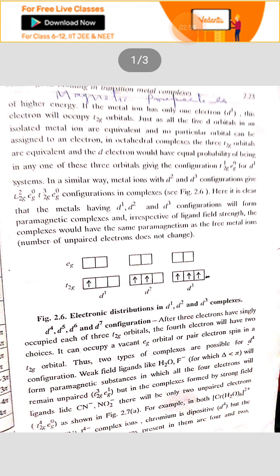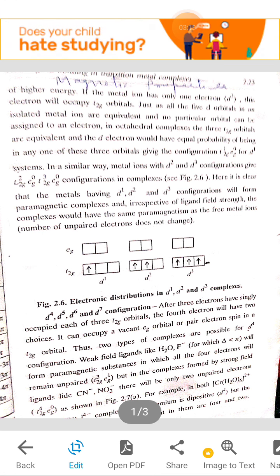For example, when chromium H2O6 2+ and chromium cyanide 6 4- ions are compared, in water molecule complex, the pairing of electrons is not done and in cyanide molecule,